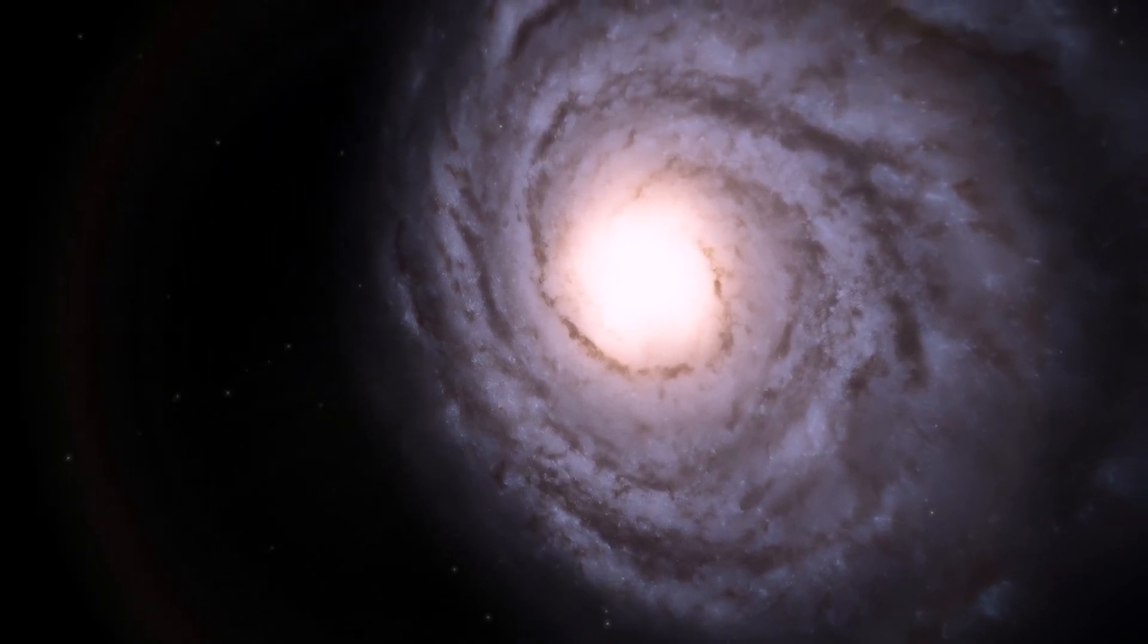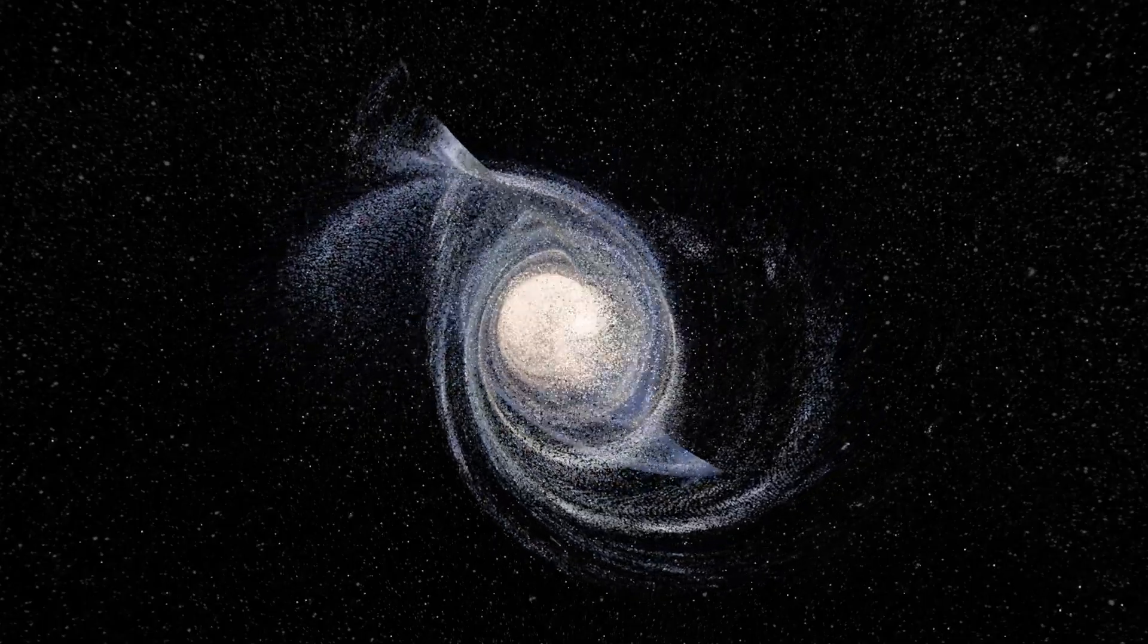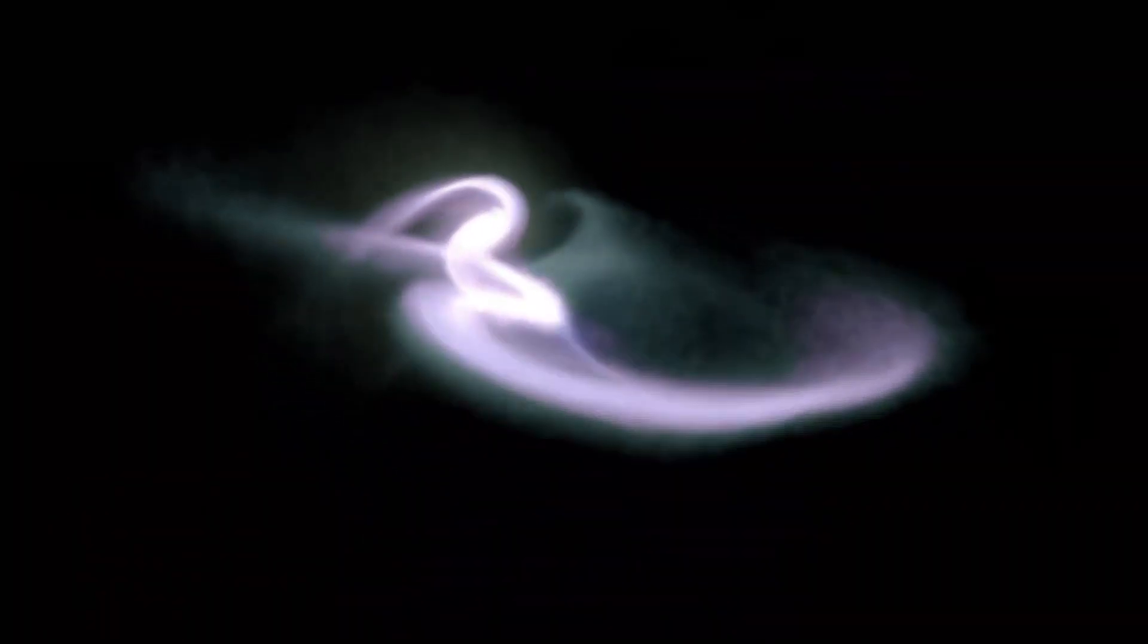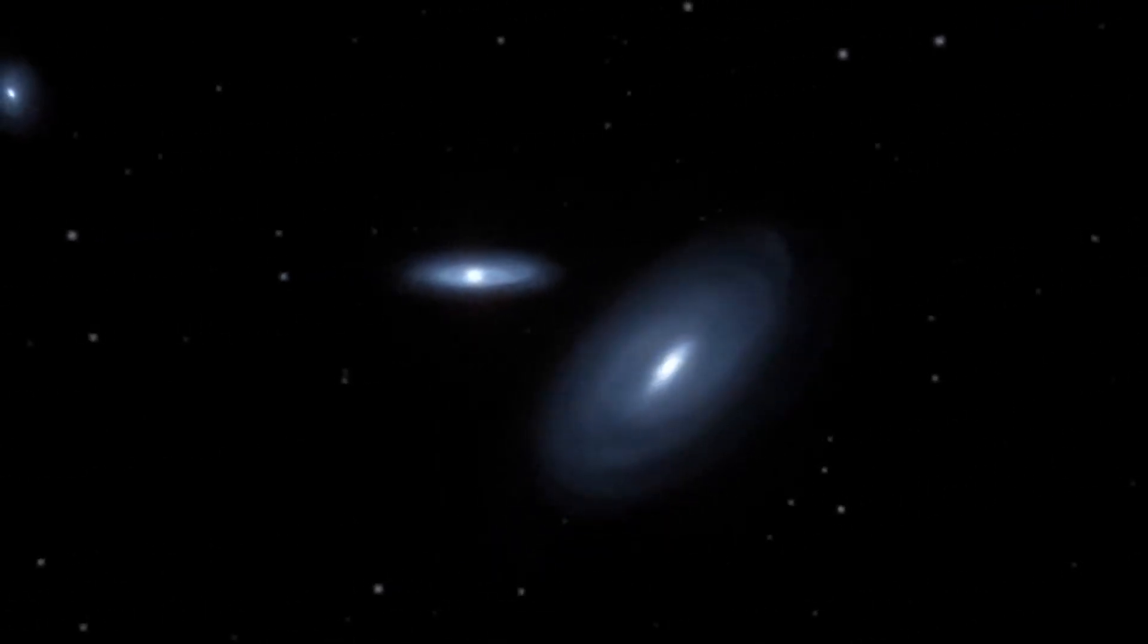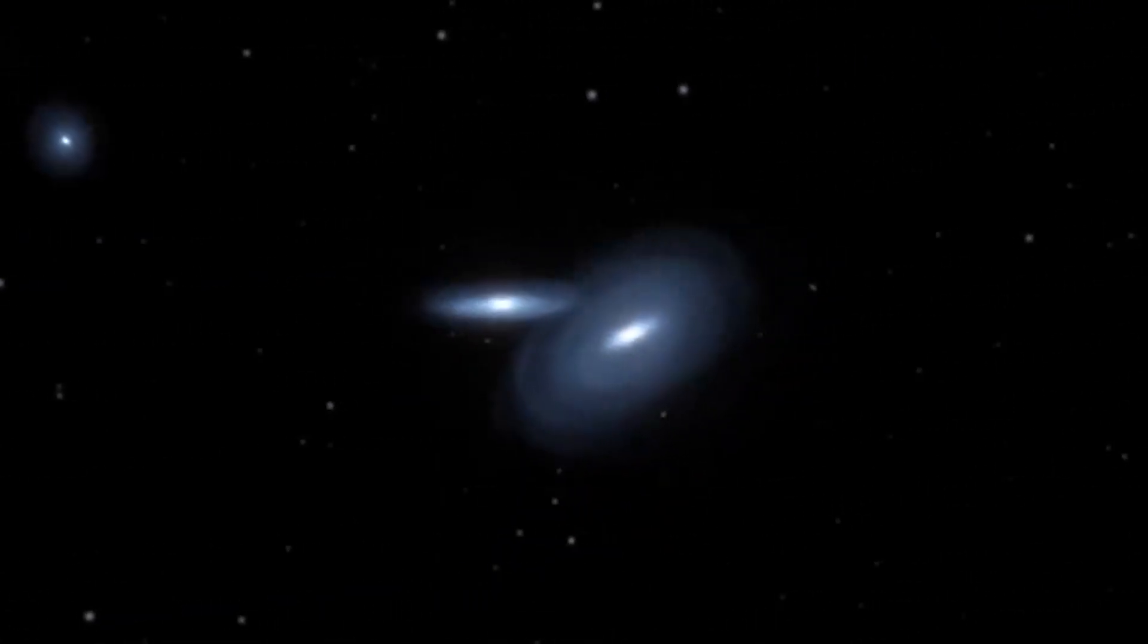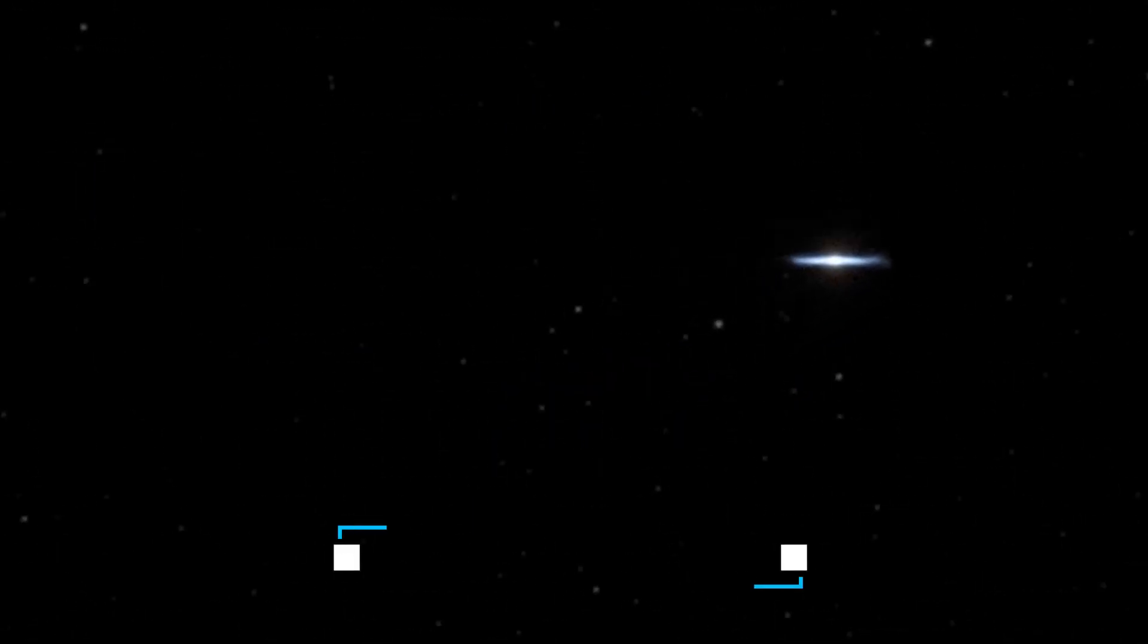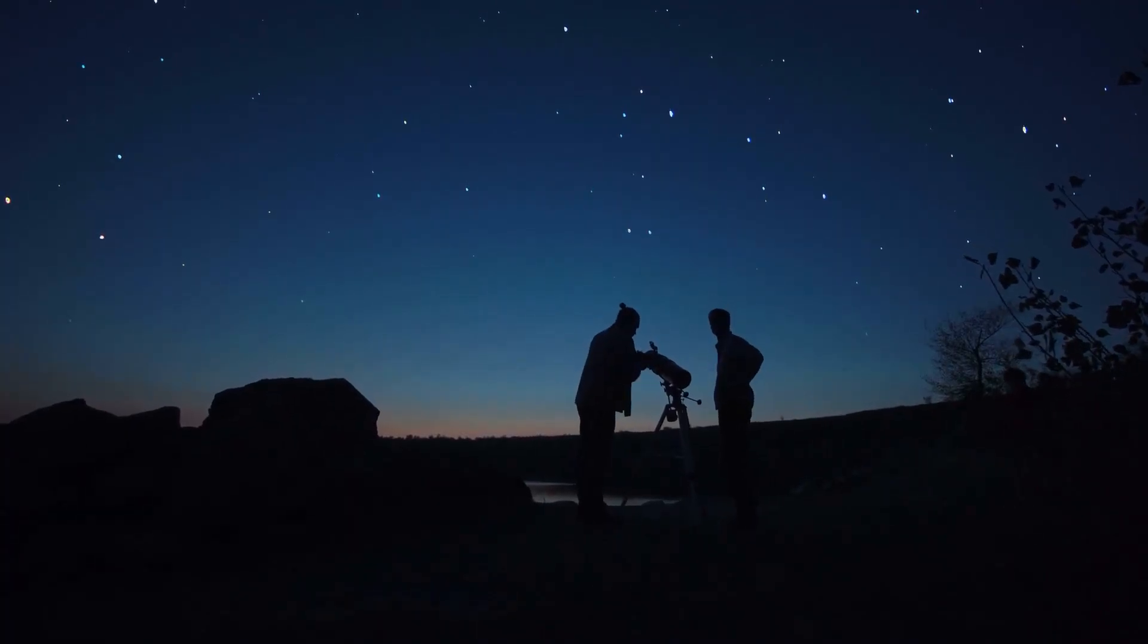Some happen when two galaxies crash into each other, and others when a smaller galaxy passes through a bigger one. It's like a cosmic collision. And guess what? The Milky Way and Andromeda galaxies are actually moving towards each other, and they're going to crash and merge in the future. People are even calling this future galaxy Milcometa or Milkdromeda. It's a pretty big deal in the astronomy world.